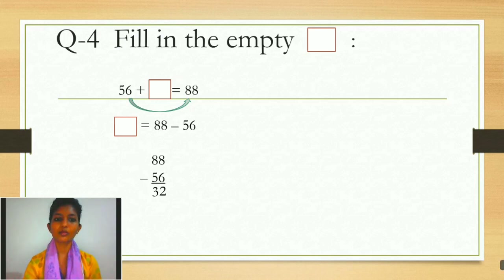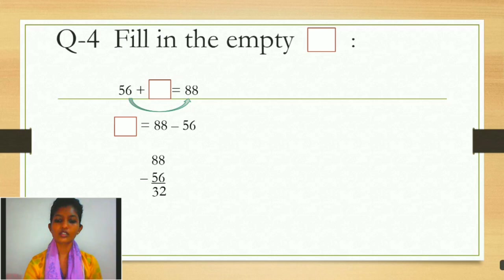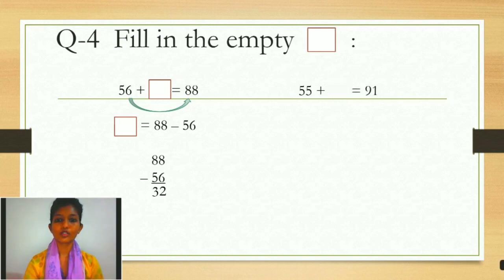Ab is 32 number ko yahan pe likh sakte ho. And you can check: 56 plus 32 is equals to 88 hai ki nahin. You can check afterwards. This was the simple addition sum. Now we are moving to the carry-and-borrow sum.